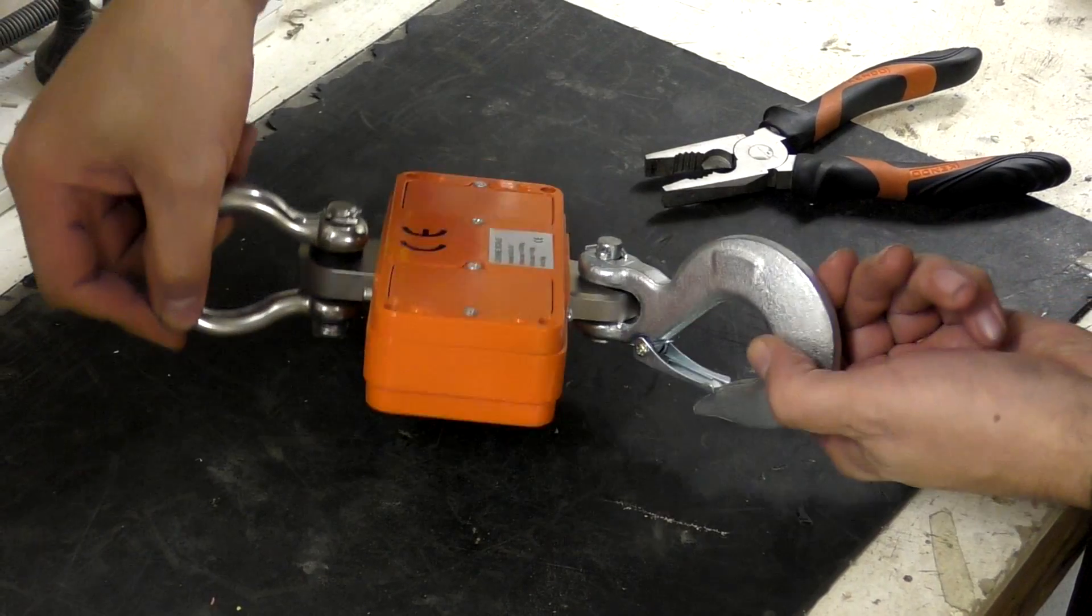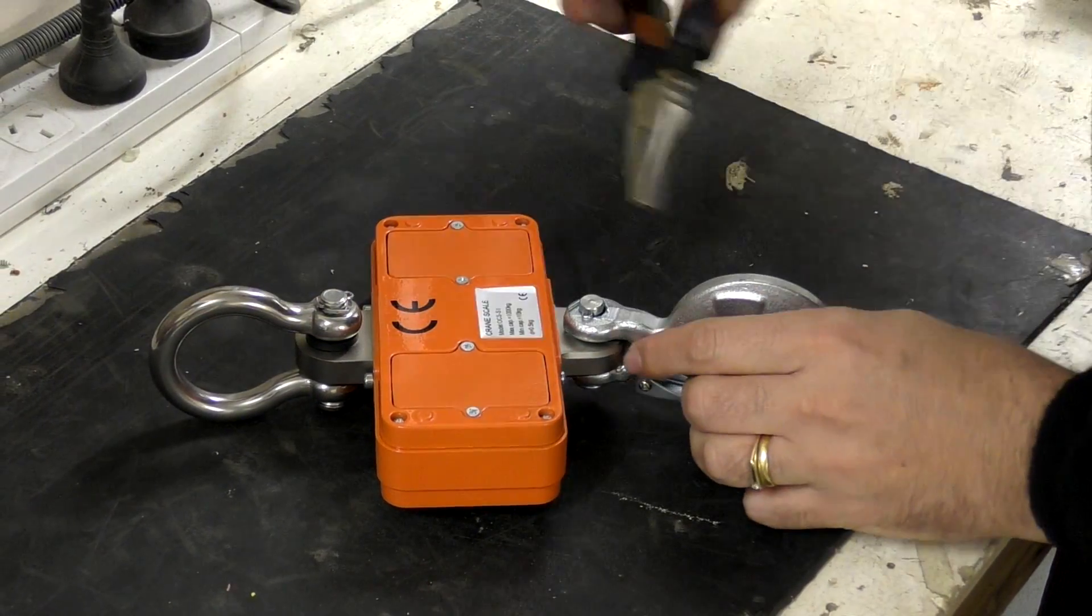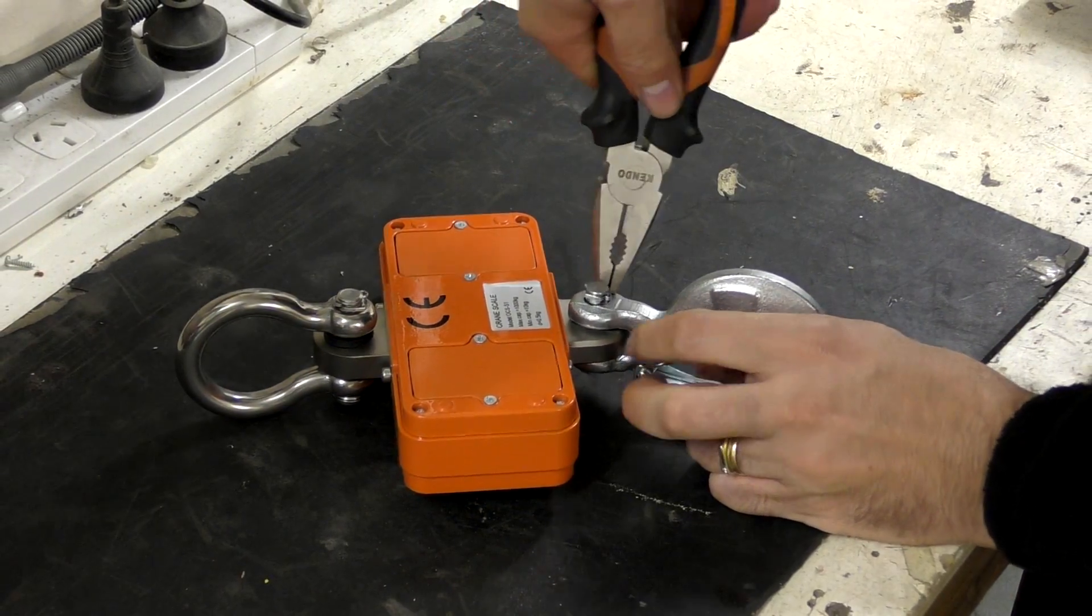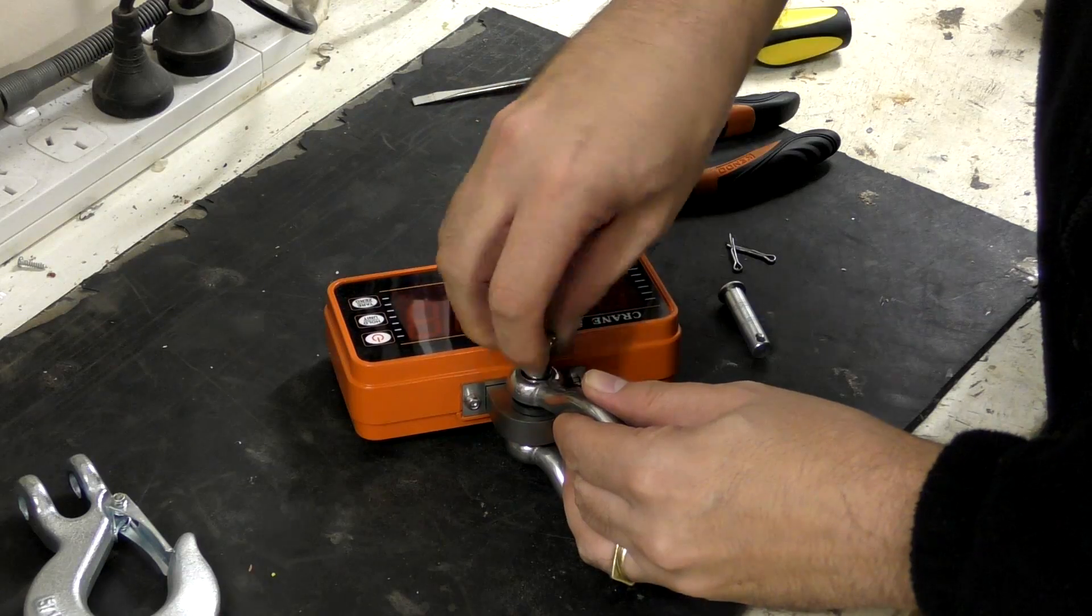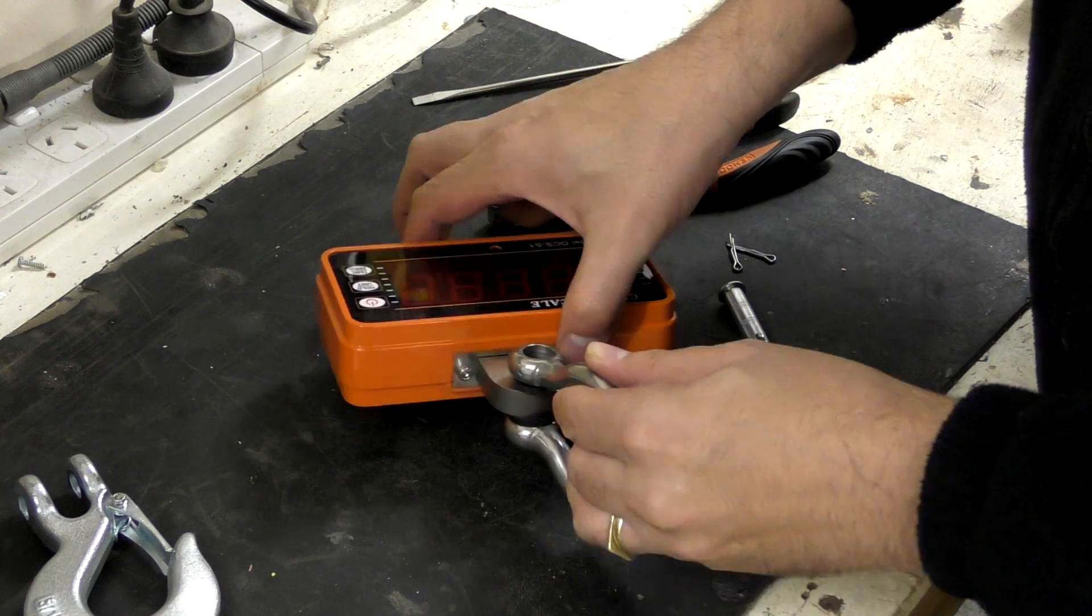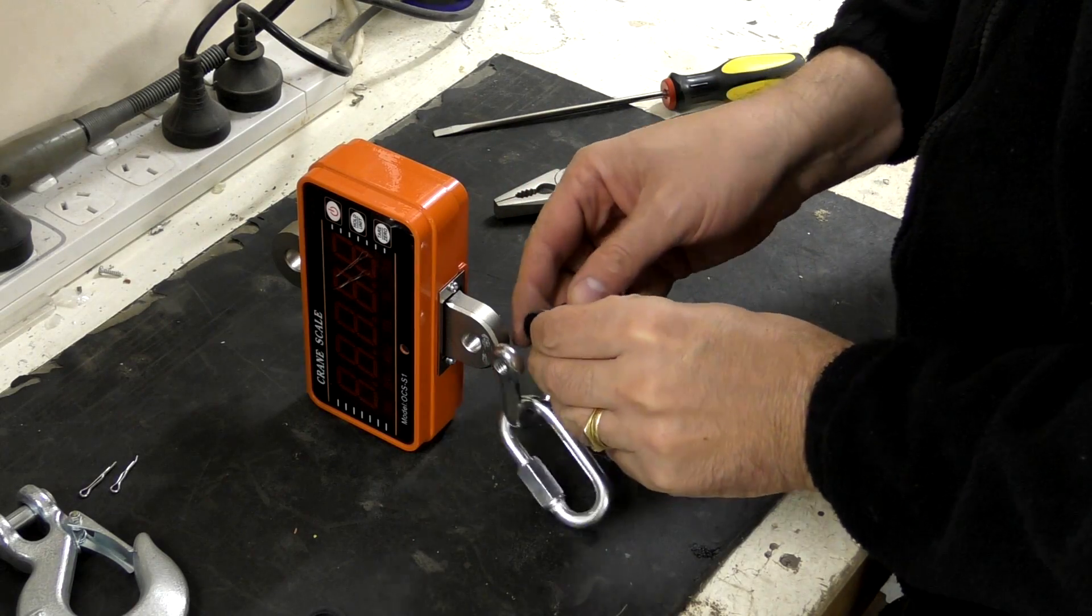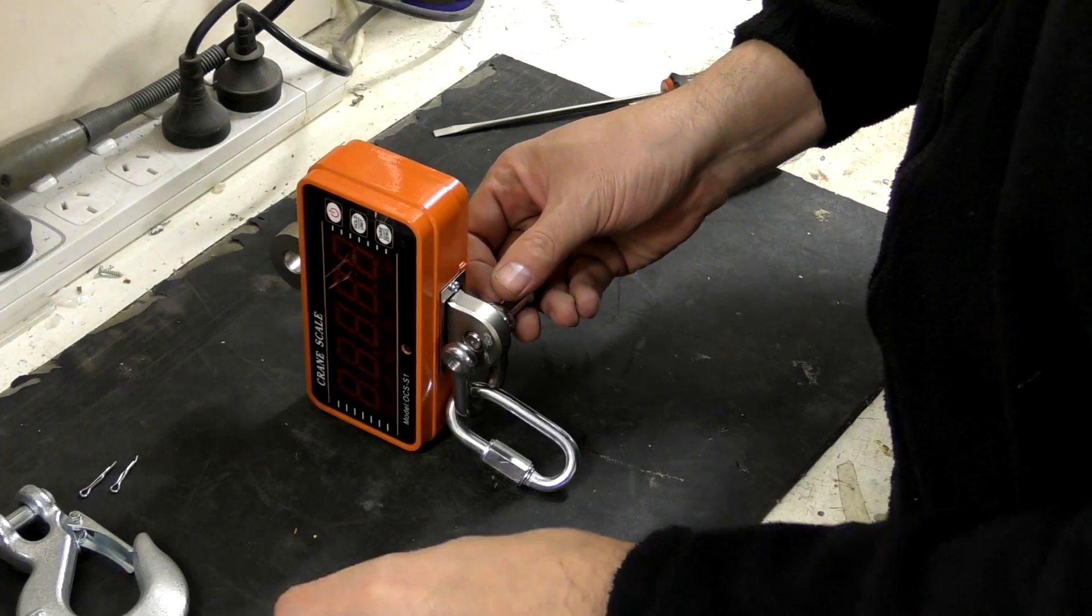We didn't need the hook that came with the scale, so we just replaced it with a smaller shackle. We've added additional shackles and links to it so that we can suspend it under the lever.